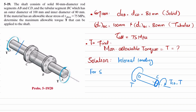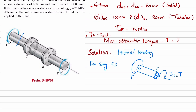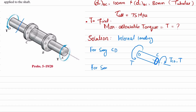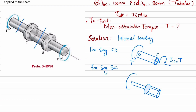Now for segment BC: we cut it and draw the free body diagram. The section includes flanges and a hollow pipe segment. At point D we have torque T, and at point B we have a counter torque T_BC. This T_BC is again equal to T in order to keep the segment in equilibrium.